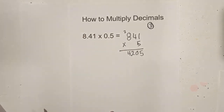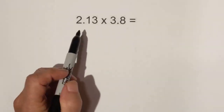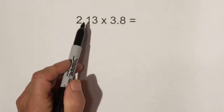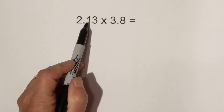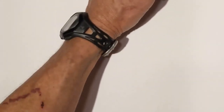So it is 4 and 205 thousandths. Let's work another example. Step one — count how many numbers are to the right of the decimal. We have one, two, three.